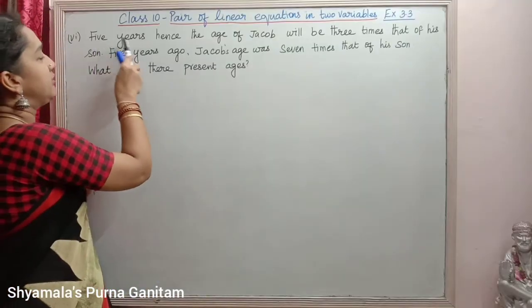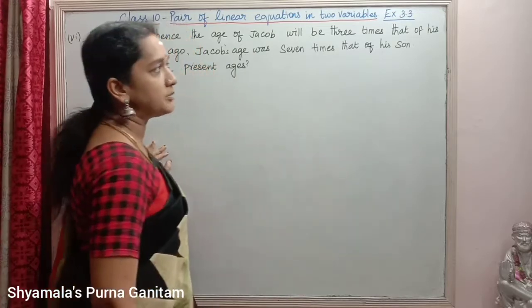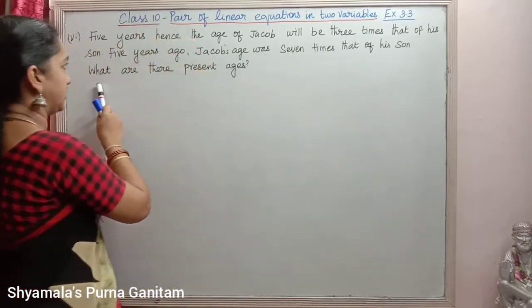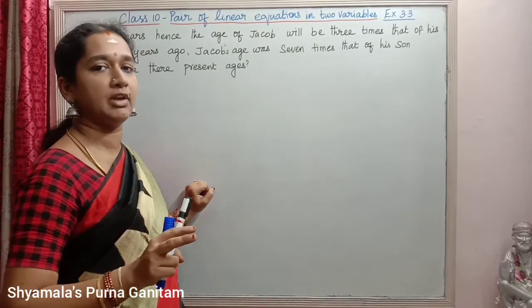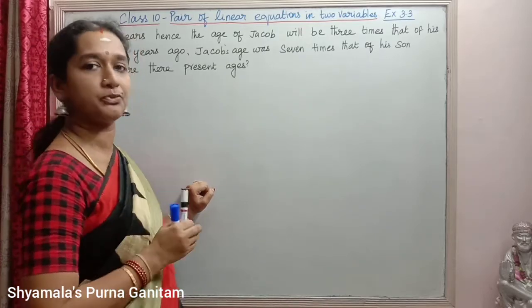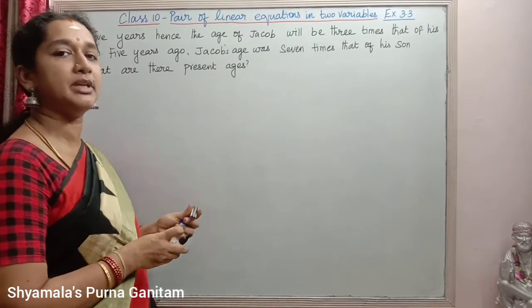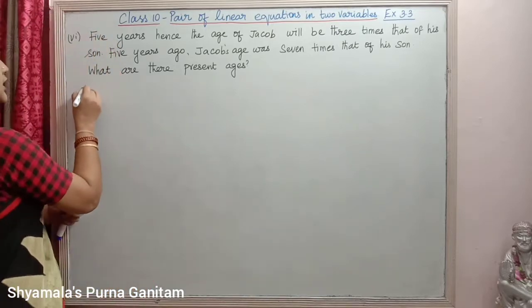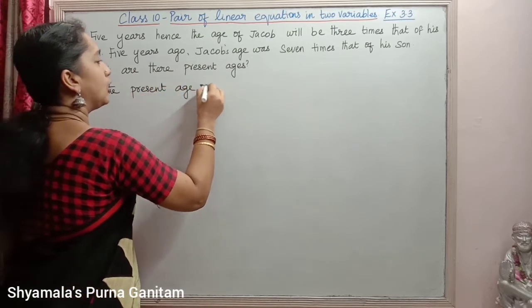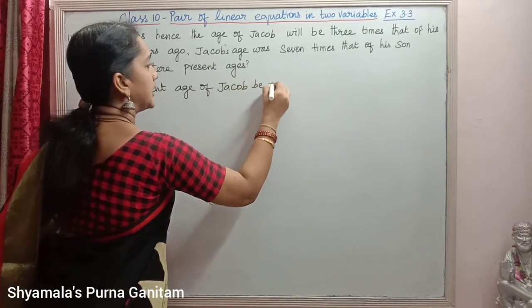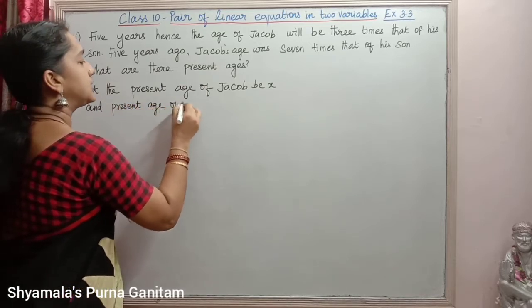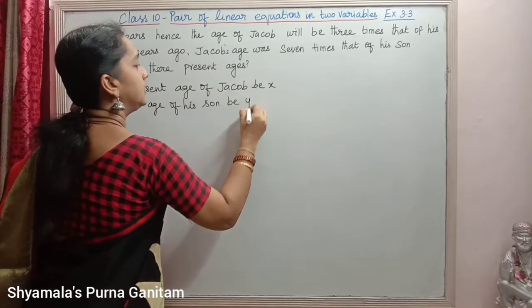The next sum: 5 years hence the age of Jacob will be 3 times that of his son. 5 years ago, Jacob's age was 7 times that of his son. What are their present ages? So two conditions are given comparing the age of Jacob and his son. Let the present age of Jacob be x and the present age of his son be y.